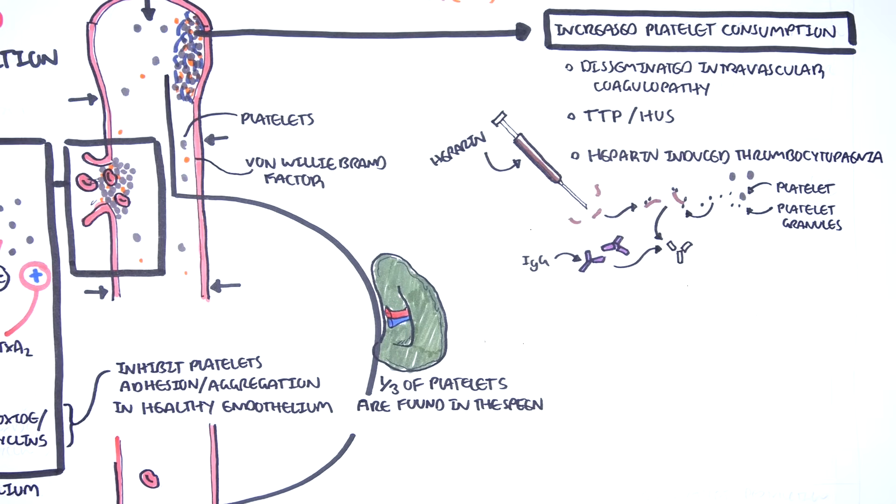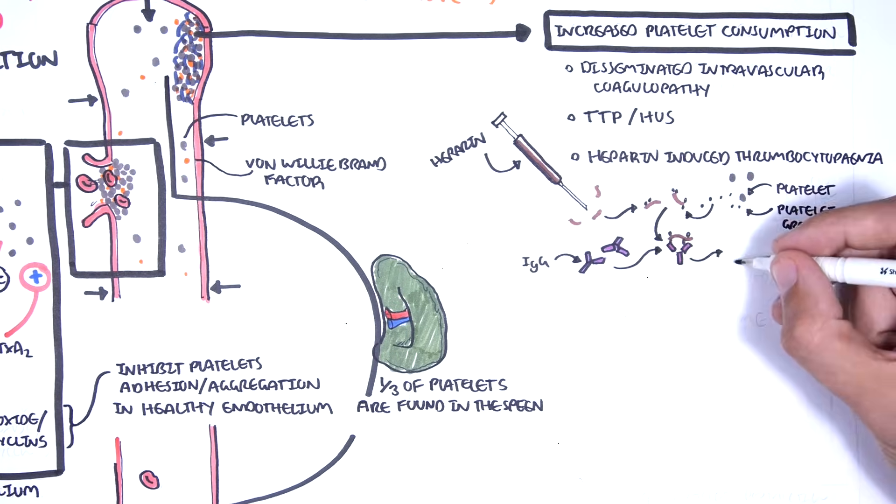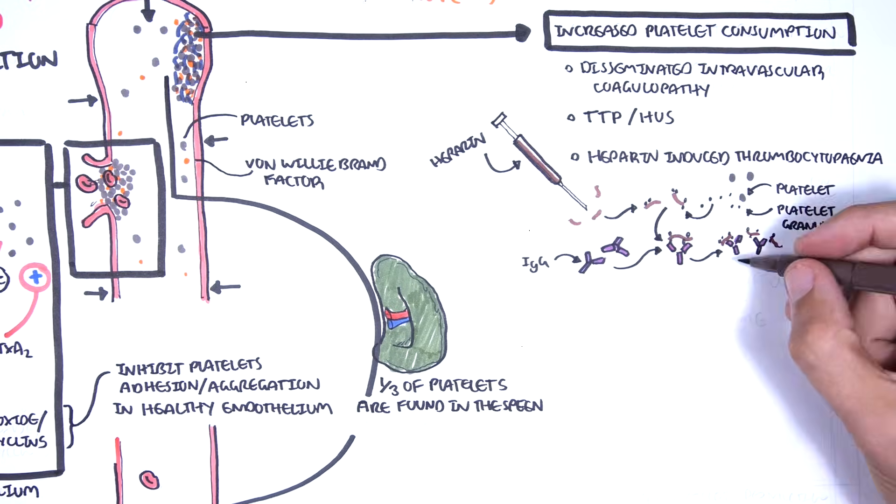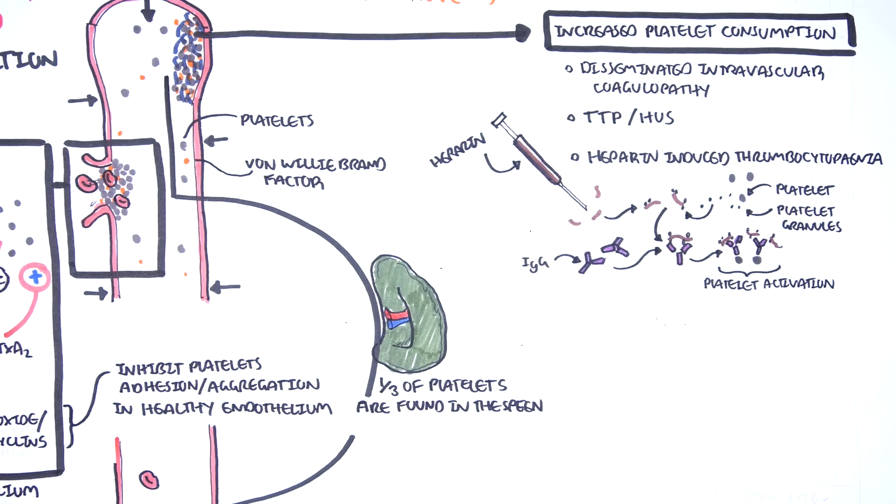This triggers the immune system to make antibodies against the heparin-platelet factor 4 complex. When the antibodies bind onto this complex, it stimulates platelet activation and aggregation. This means increased platelet consumption, resulting in thrombocytopenia.